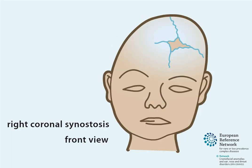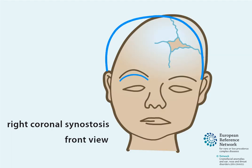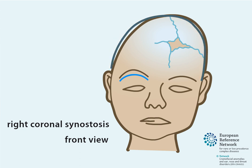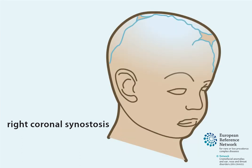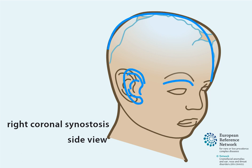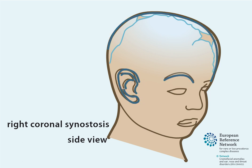In the front view, a typical asymmetrical facial appearance is noticed. The eye socket is elevated with an upward position of the brow, also known as the harlequin sign. From the side, the prominence of the upper eyelid and globe is noted as a result of the recessing of the lateral orbital rim.